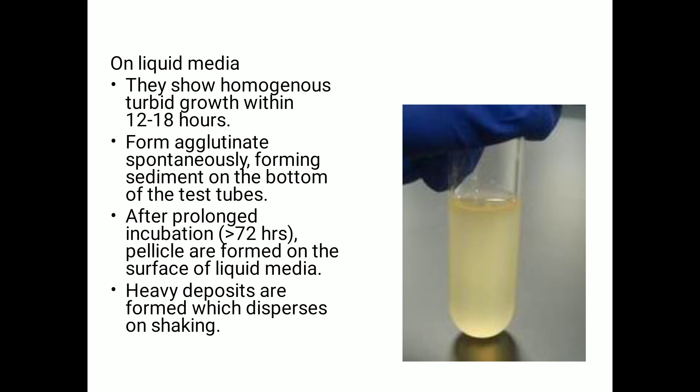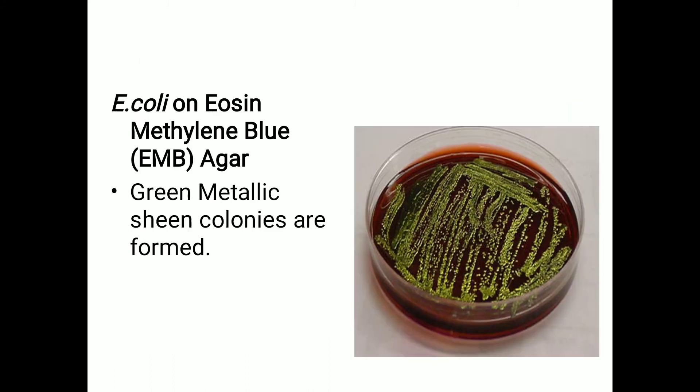Next is EMB agar, also known as Eosin Methylene Blue agar. When E. coli is grown on EMB agar, it shows a characteristic green metallic sheen. This green metallic sheen appearance is a key identifying feature of E. coli on this medium.